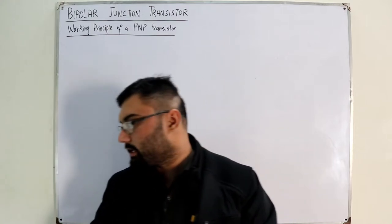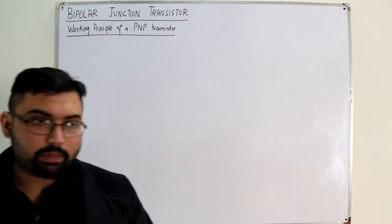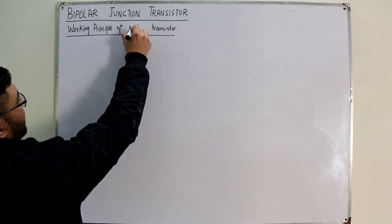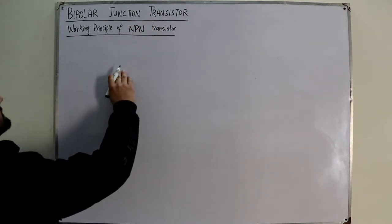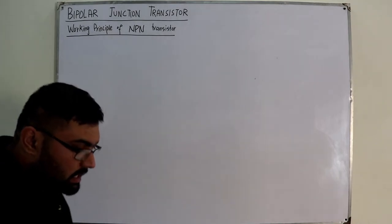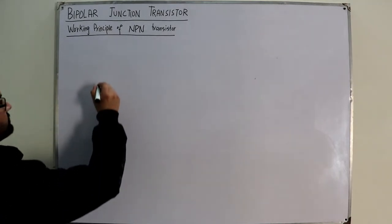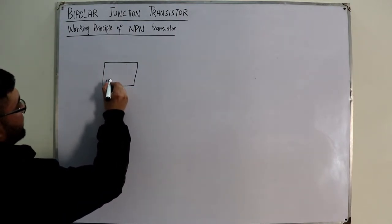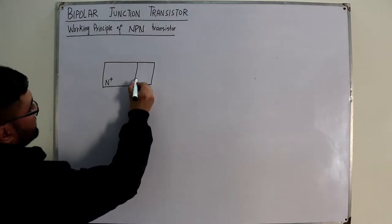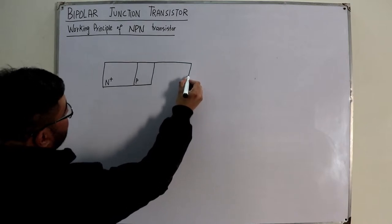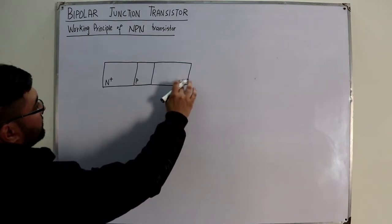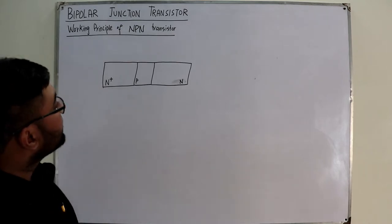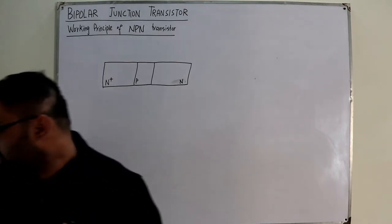Bismillah. Assalamu alaikum, welcome back to Salah Khan YouTube channel. Today, continuing the topic, we see the working principle of an NPN transistor. In an NPN transistor, the emitter is the first N layer with the highest doping, then you have the thin and least-doped P base, and then the moderately doped N collector.